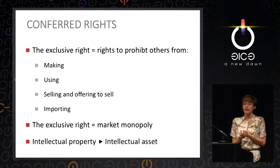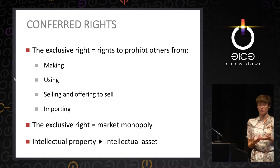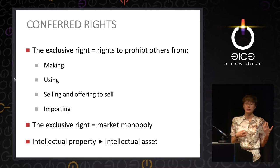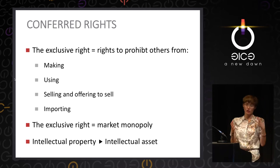What does a patent give you? It's an exclusive right — it gives you the right to prohibit others from using, making, selling, offering to sell, or importing the protected technical teaching. Legally it's called an exclusive right, but this exclusivity is translated as market monopoly, because it gives you a monopoly on the market. You, as the patent holder, have full exclusivity to monetize the patent. We call this intellectual property, and intellectual property has strong economic implications.